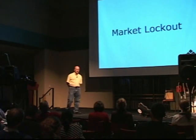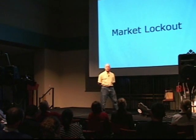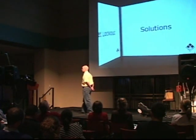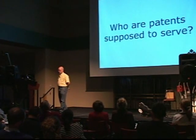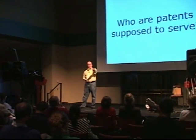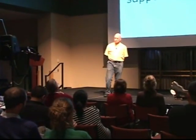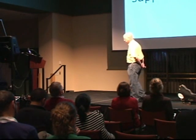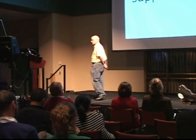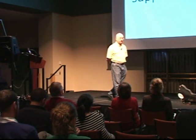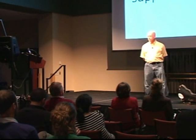Market lockout. We talked about mutual assured destruction — we're creating an oligarchy of large corporations holding significant patent portfolios that are blocking entry to newer companies. Who are patents supposed to serve? If we look at the constitutional clause and analyze it, they're supposed to serve us by progressing science and useful arts. It's a deal between us as the people and the patent holders: we will give you a monopoly for some time, as long as in the long term we, the people, derive a benefit.